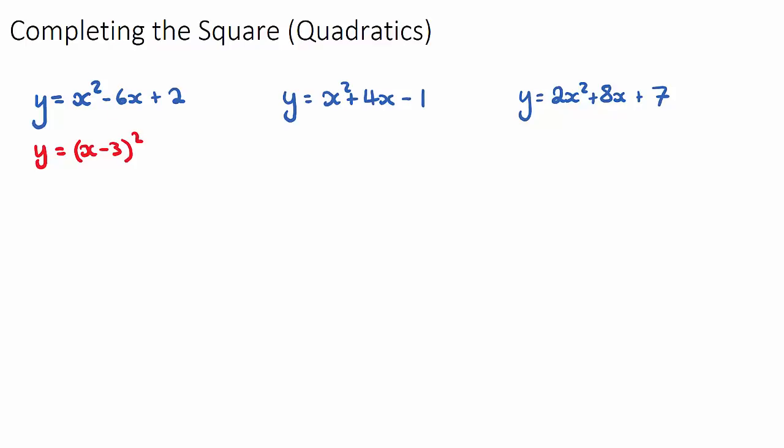Then we have our remaining constant, so plus 2, and then the last step is we need to subtract the number inside the bracket squared. So if we square negative 3, it will be 9. So it's always a minus sign, and then that number squared. If we were to tidy this up, we're going to get x minus 3 squared, and then minus 7.